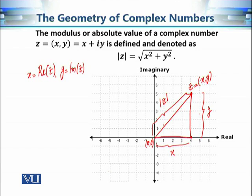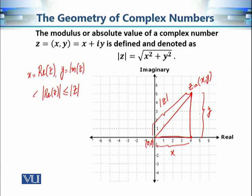We know from elementary geometry that the length of the base is always less than or equal to the hypotenuse. So we can say that the real part of z, since it is a length, is going to be less than or equal to the hypotenuse of this triangle. Since the real part of z is a real number, and a real number is less than or equal to its absolute value, we can say that Re(z) ≤ |Re(z)| ≤ |z|.